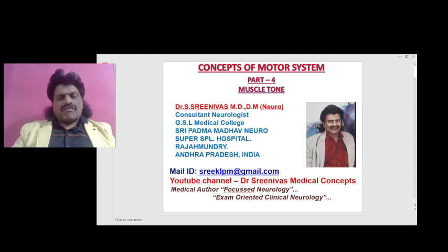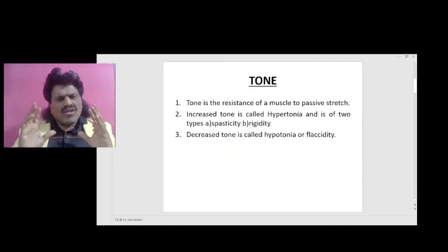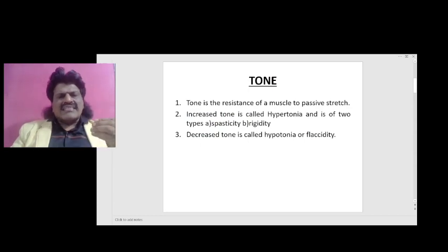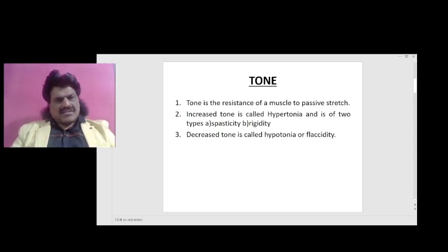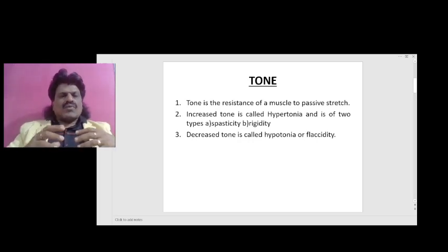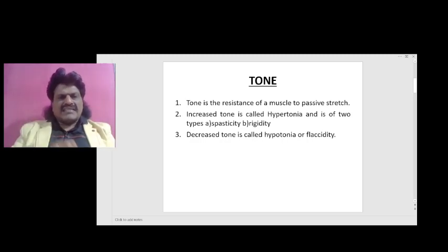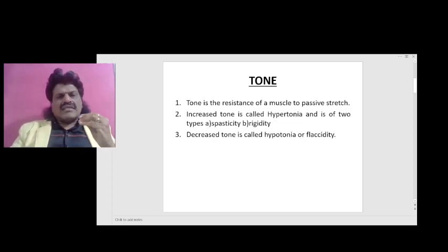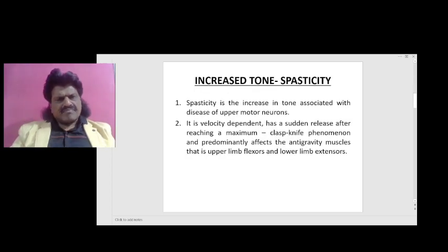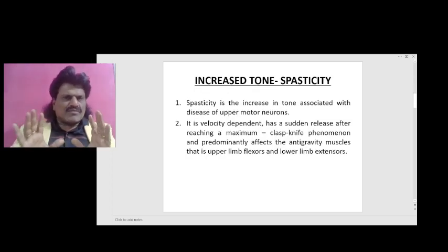This is concepts of motor system part 4: muscle tone. So what is tone? Tone is the resistance of a muscle to passive stretch — when we actively move the limb it becomes power. Increased tone is called hypertonia and is of two types: spasticity and rigidity. Decreased tone is called hypotonia or flaccidity.